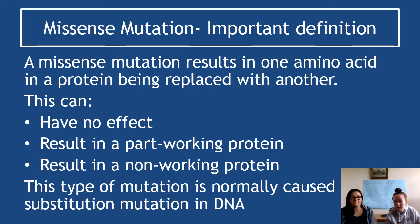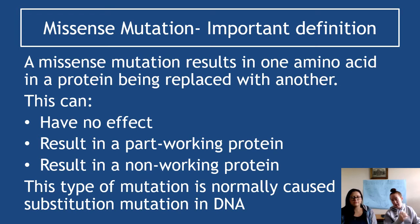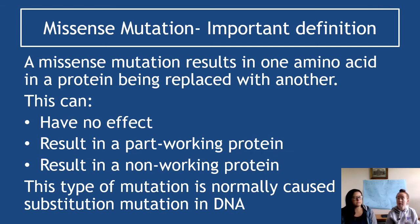A missense mutation — an important definition — results in one amino acid in a protein being replaced with another. It's not a whole chain of them, just one being swapped for another. This can have utterly no effect whatsoever, result in a partially working protein, or result in a completely non-working protein. This type of mutation is usually caused by a substitution mutation, because it affects just one amino acid, not the whole reading frame.